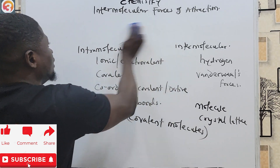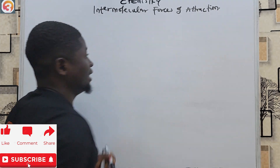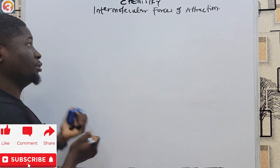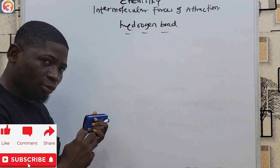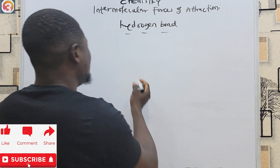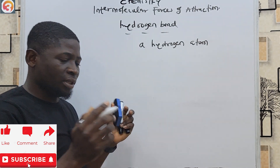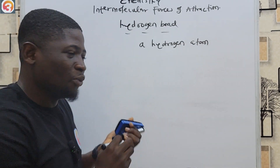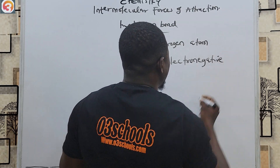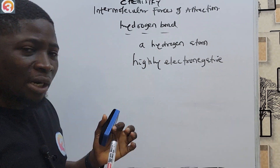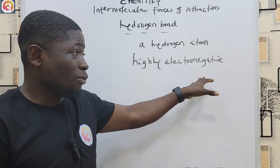We are going to focus on hydrogen bonds first — how a hydrogen bond is formed — and then we will talk about van der Waals forces. A hydrogen bond is formed between a hydrogen atom of one molecule and a highly electronegative atom of another molecule.